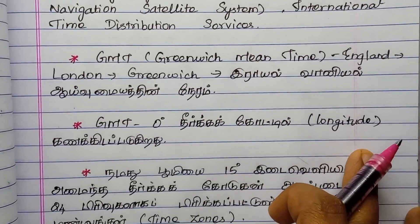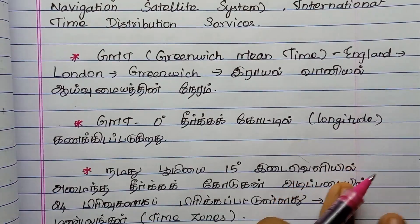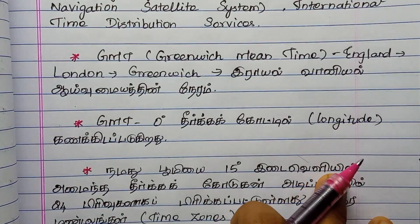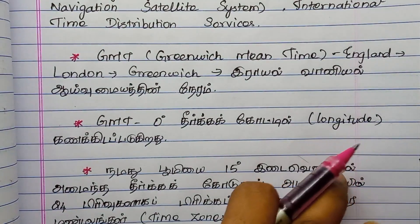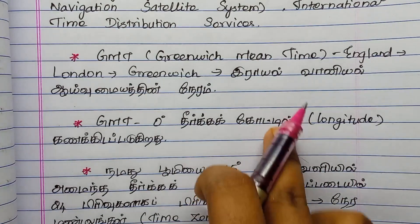The Atomic Clock is used in the Global Positioning System (GPS). This is also connected to the GMT — Greenwich Mean Time — which is the Greenwich Line.